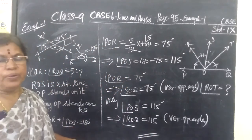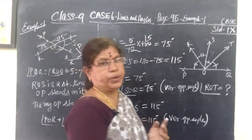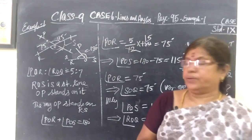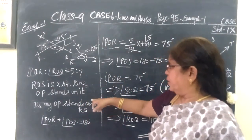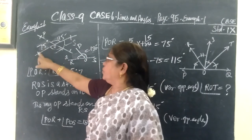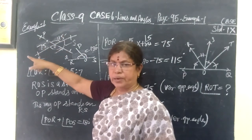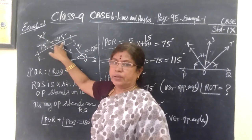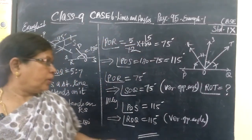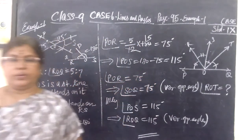Okay, in this problem we have used two properties. One is sum of the adjacent angles on a straight line is equal to 180 degrees. Another one is vertically opposite angles are equal. And we continue the next question in the next class.